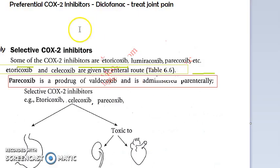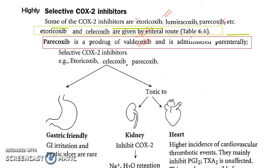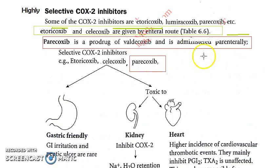Now look at the highly selective COX-2 inhibitors. These include etoricoxib, which is a highly selective COX-2 inhibitor, as well as celecoxib and parecoxib. Parecoxib is given parenterally, while etoricoxib and celecoxib are given orally.